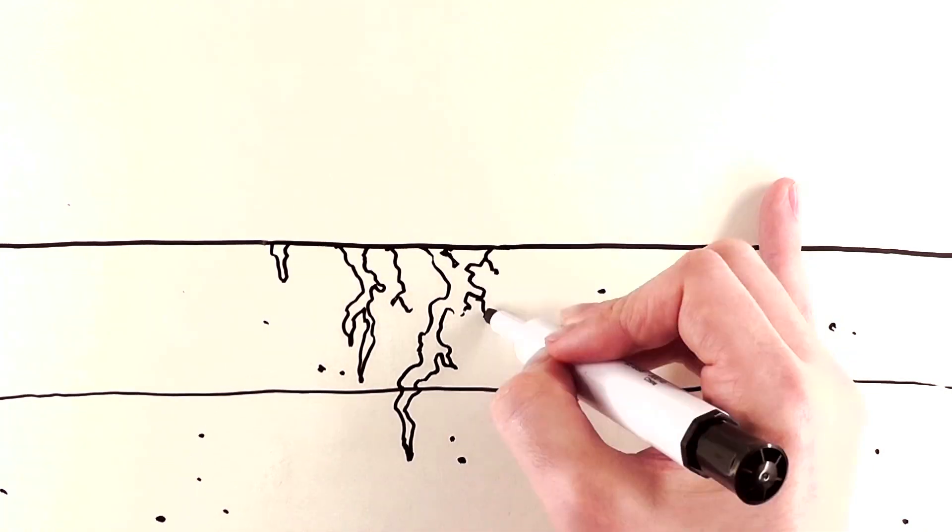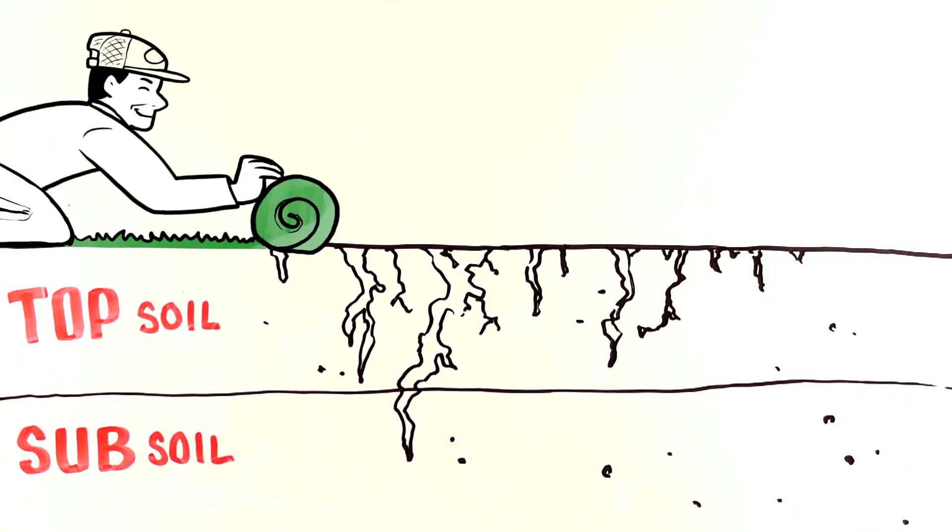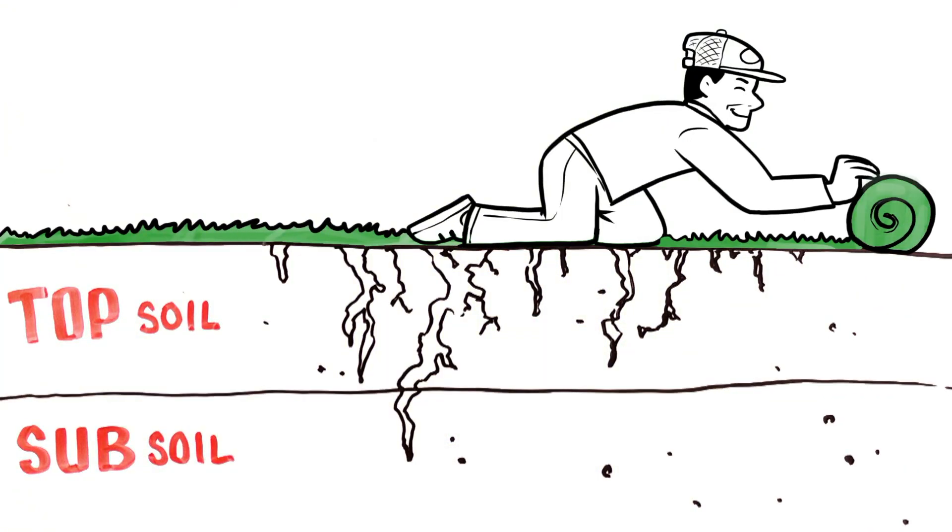After you lay sod, the roots go through a thin layer of topsoil and into the subsoil. The subsoil compacts, making it difficult for the grass to receive the proper nutrients and water.